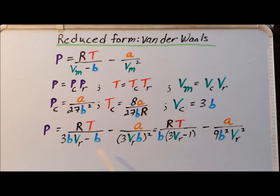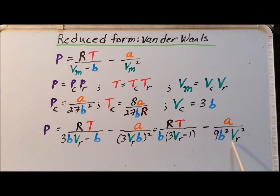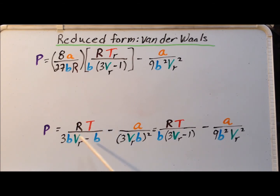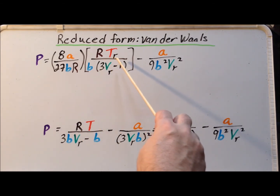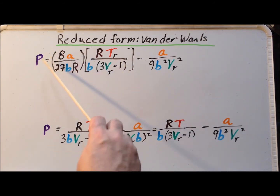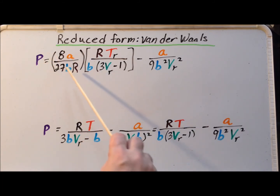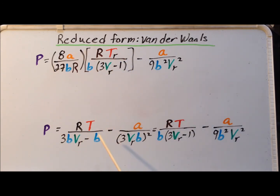Simplifying, we can factor out a b in the denominator of the first term, so we get b times the quantity 3v sub r minus 1, and the 3v sub r b squared is now 9b squared v sub r squared. That takes care of introducing the reduced form for the volume. Next, we replace the real temperature t by the product of the reduced temperature t sub r and the critical temperature t sub c, which is 8a over 27bR. So we replace t by t sub r times t sub c.